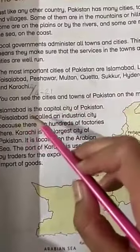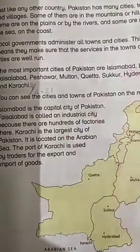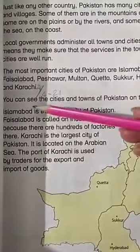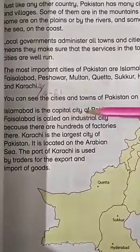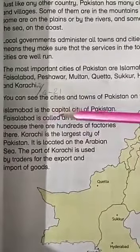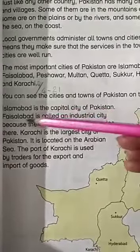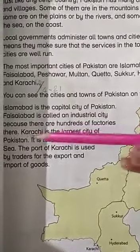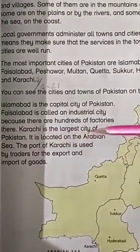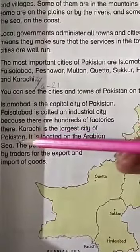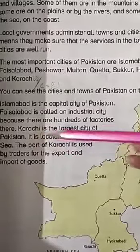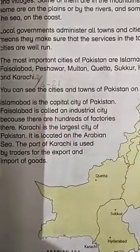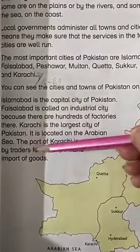Islamabad is the capital city of Pakistan — Islamabad is Pakistan's capital. Faisalabad is an industrial city because there are hundreds of factories there. Karachi is the largest city of Pakistan. It is located on the Arabian Sea. The port of Karachi is used by traders for the export and import of goods.